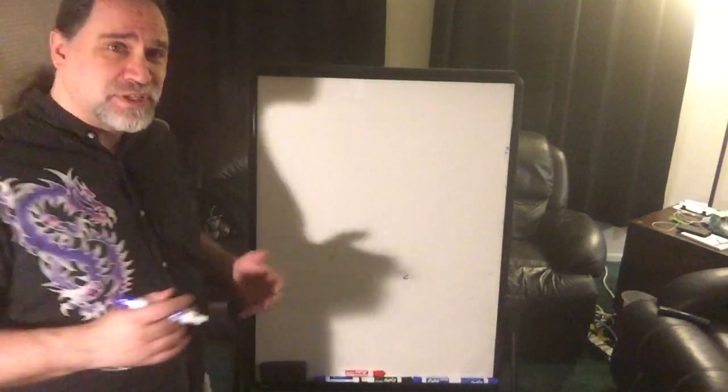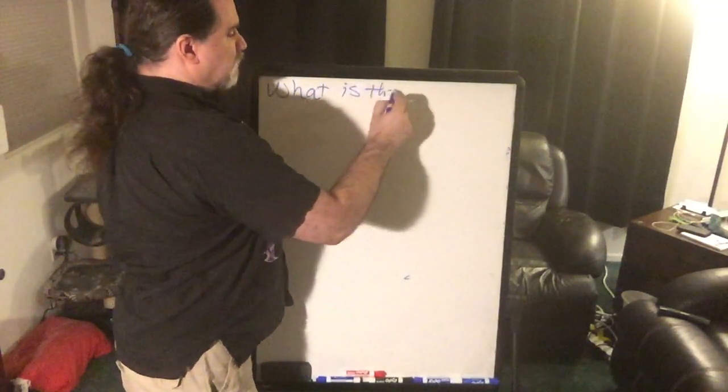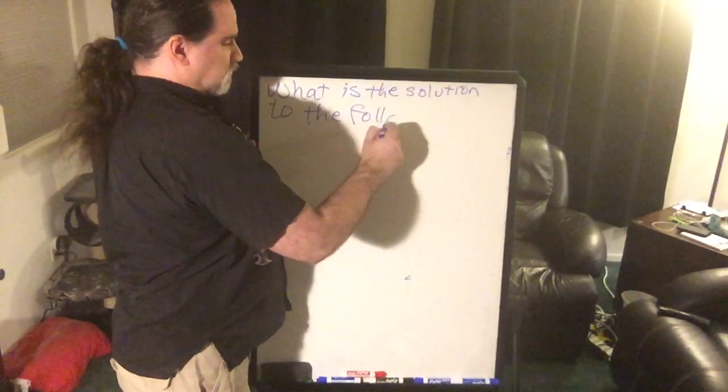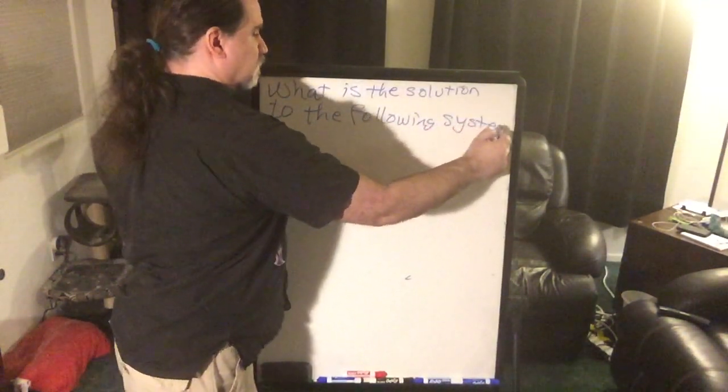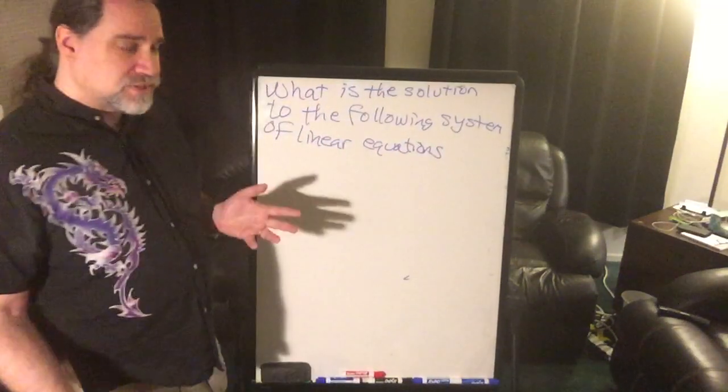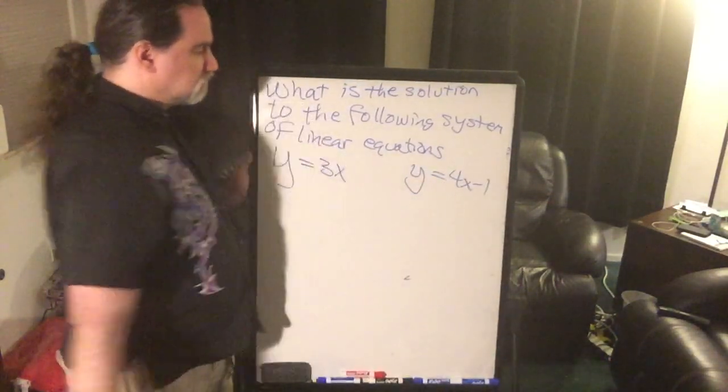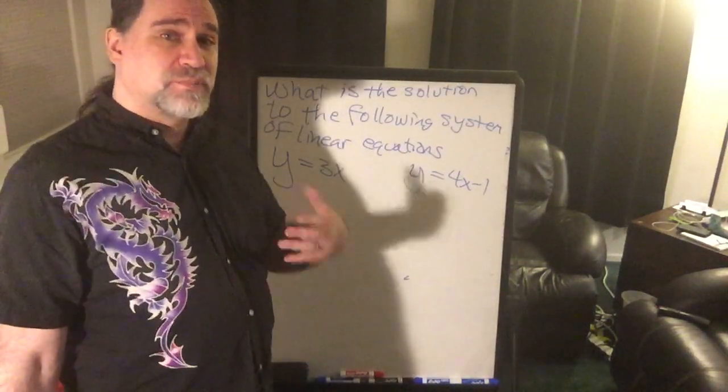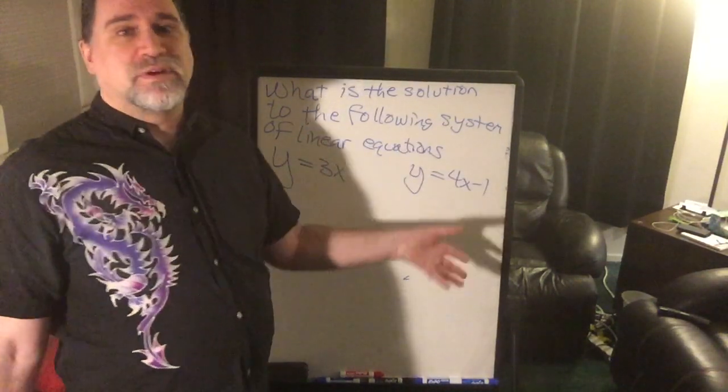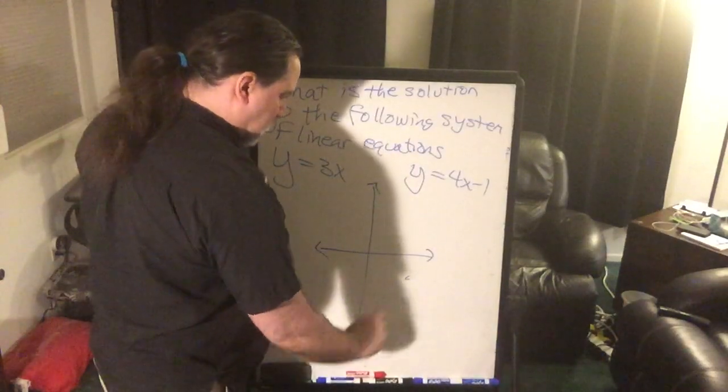So let's do a couple of examples. We'll do an easy example and a not-so-easy example. The question would be, what is the solution to the following system of linear equations? We're trying to figure out where the two lines intersect. So we have y equals 3x and y equals 4x minus 1. These are pretty easy because they're already in slope-intercept form. I don't even need to make a table. I know how to use the slope and the y-intercept to create the graph. Now I want to put these two equations on the same graph.